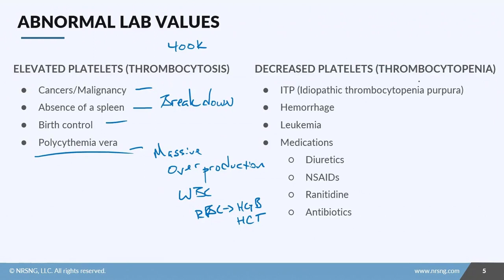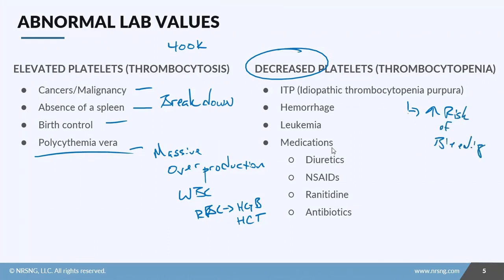If platelets are low, this is called thrombocytopenia. One cause is ITP — idiopathic thrombocytopenic purpura — an autoimmune disease that attacks antibodies on the platelets and destroys them. Without platelets, patients can't clot, putting them at much higher risk of bleeding. Treatment involves medication therapy to suppress the immune system. These patients may also develop petechiae — little purplish areas or bleeding stars under the skin — which should make you suspect a platelet issue.